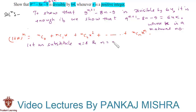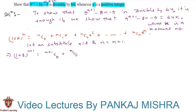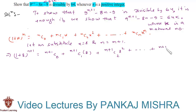Substituting gives us 1 plus 8, whole raised to n plus 1, equals (n+1) C 0, plus (n+1) C 1 times 8, plus (n+1) C 2 times 8 squared, and so on up to (n+1) C (n+1) times 8 raised to n plus 1.